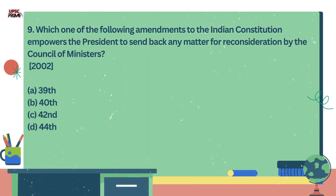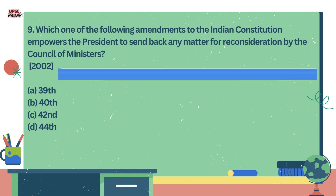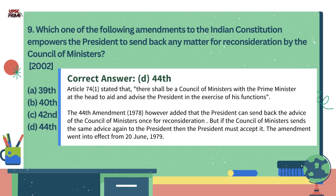Question number 9. Which one of the following amendments to the Indian Constitution empowers the President to send back any recommendation for reconsideration by the Council of Ministers? Option A: 39th. Option B: 48th. Option C: 42nd. Option D: 44th Amendment Act. The correct answer is the 44th Amendment Act. Article 74 stated that there shall be a Council of Ministers with the Prime Minister at the head to aid and advise the President in the exercise of his functions. The 44th Amendment Act 1978 added that the President can send back the advice of the Council of Ministers once for reconsideration, but if the Council of Ministers send the same advice again to the President then the President must accept it. The amendment went into effect from June 1979.